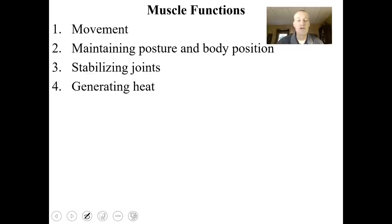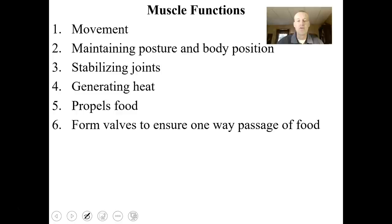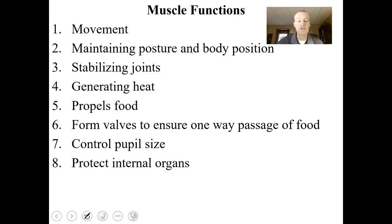Muscles stabilize joints. They also generate heat — every time a muscle contracts, you generate heat. Part of the muscular system helps to propel food through the digestive system. It forms valves; there are muscles that form little circular valves called sphincters that ensure the one-way passage of food. They control pupil size, protect internal organs from damage — strong rectus abdominis muscles help protect you from impacts — and muscles are used to express emotions. So you can see there's a wide variety of muscle functions inside our body.